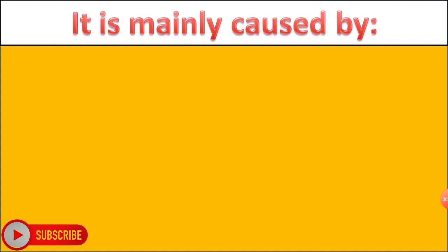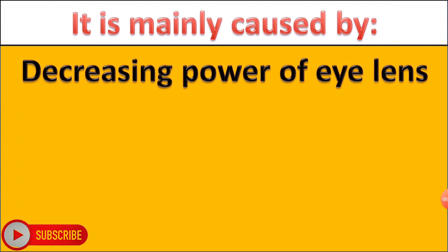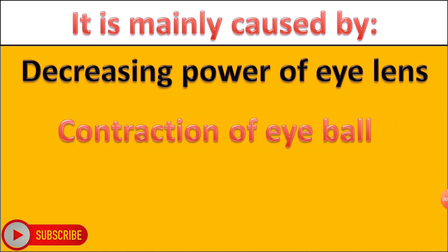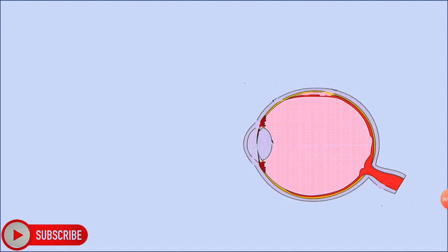Hypermetropia is mainly caused by a decrease in the power of the eye lens, contraction of the eyeball, or thinning of the eye lens. It can be corrected by using a suitable power of convex or converging lens, which converges rays of light from near objects onto the retina.